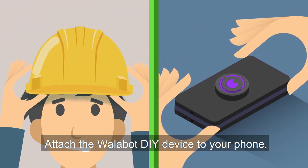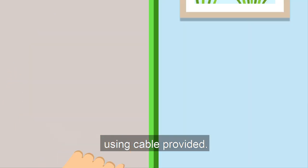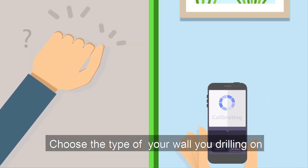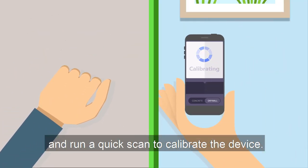Attach the Walabot DIY device to your phone using the cable provided. Choose the type of wall you're drilling on and run a quick scan to calibrate the device.